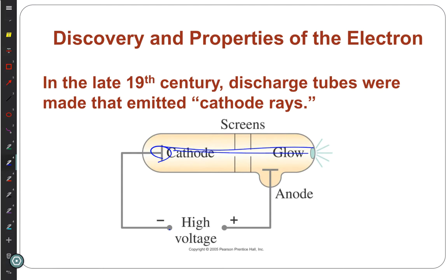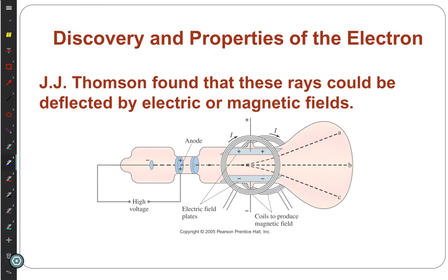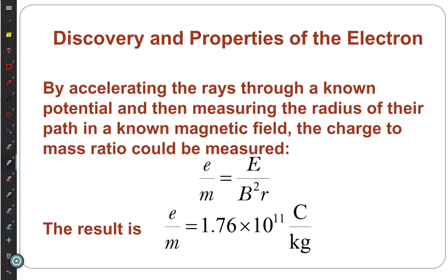Coming back to the atomic model: if you have electrons in matter, Thomson came up with a model called the plum pudding model. He said matter is like a slurry of positive charge with little points of negative charge — the electrons — embedded in it. Thomson found the charge-over-mass ratio.